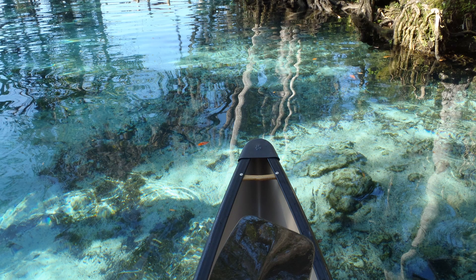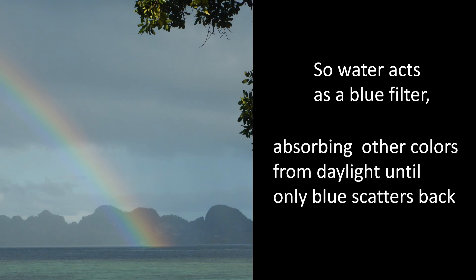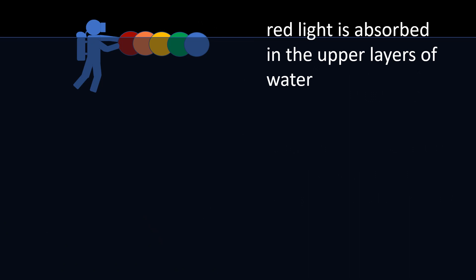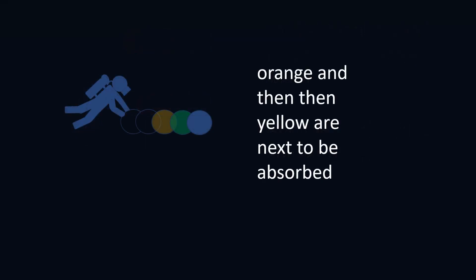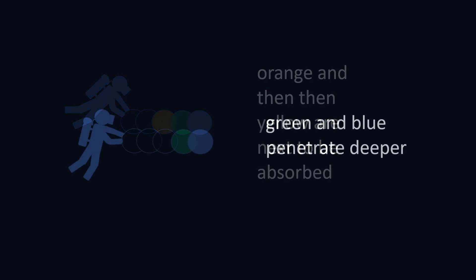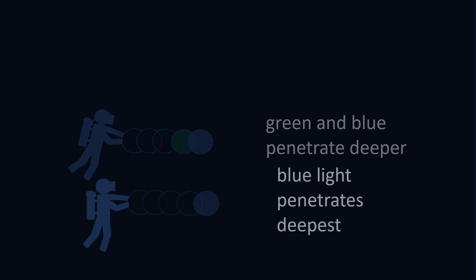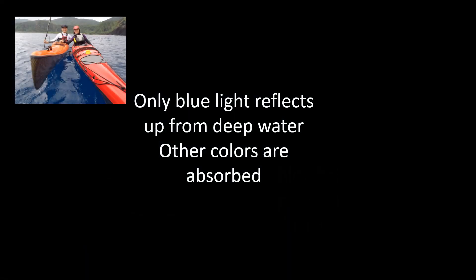Water acts as a blue filter to daylight, absorbing other colours until there is only blue for us to see reflecting back. The longer wavelengths of red light are absorbed in the uppermost few feet of water. Deeper than that, any red object will appear black. The slightly shorter wavelengths of orange and yellow are the next to be absorbed, leaving green and blue till last. Blue penetrates deepest, so the remaining light that scatters back for us to see at the surface is blue.